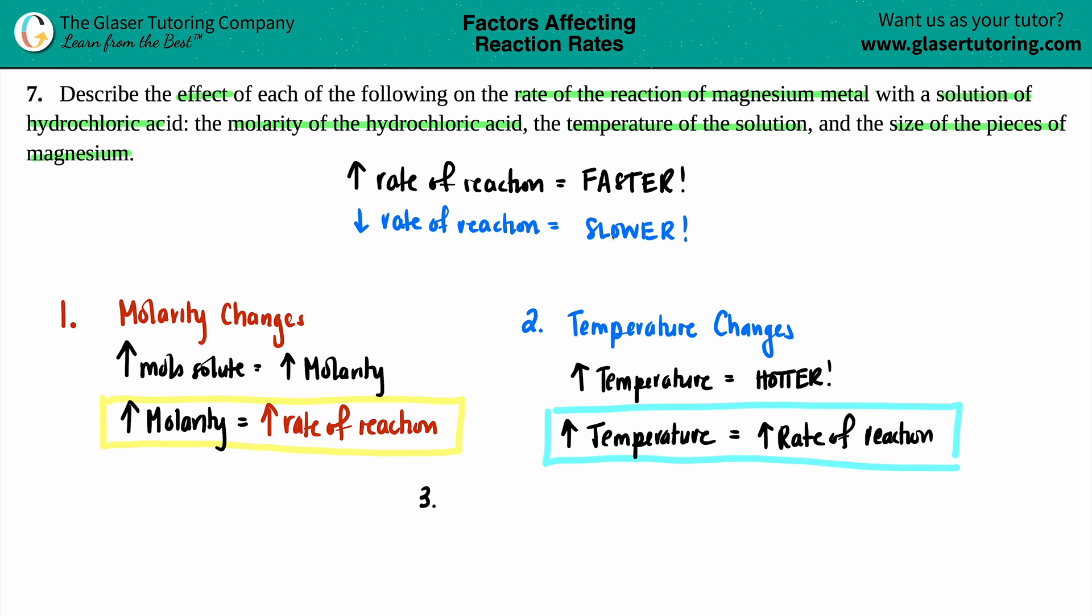The third thing that we have to talk about is the size of the pieces. So we'll say particle size. Now, we're basically talking about something that maybe might be in a bigger amount versus stuff that is smaller. In this case, we're specifically talking about the magnesium. You either can have a larger particle size or a smaller particle size.